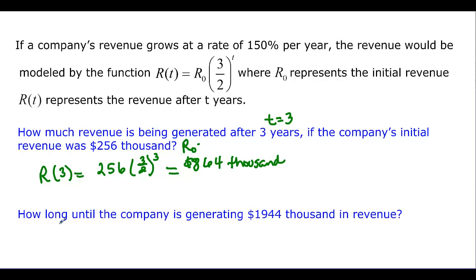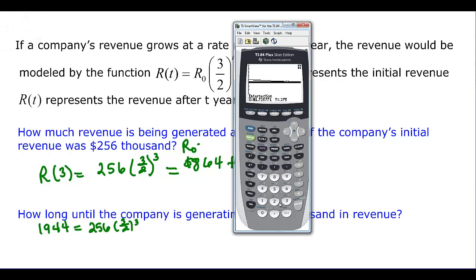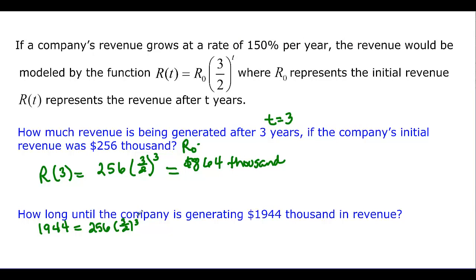How long will the company be until it's generating 1,944? Well, that's R. We're going to have to solve for T. So 256 times 3 over 2 to the third. We're going to have to take that 1,944 and divide it by 256. And then I want to convert it into a fraction to see if nice things happen for us. And it doesn't really. It doesn't take us down to something like 3 over 2. So we'll have to graph when we solve this one. But this isn't 3. This is T.